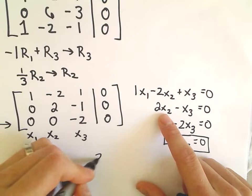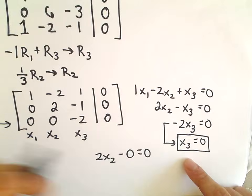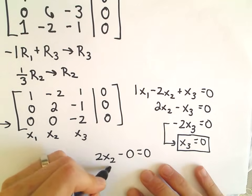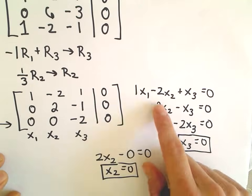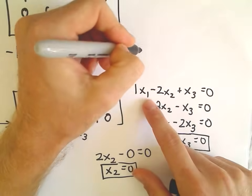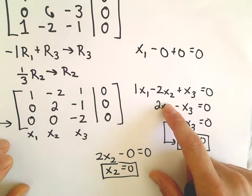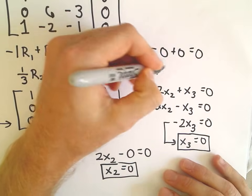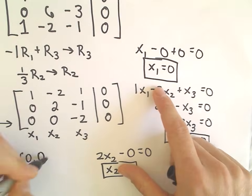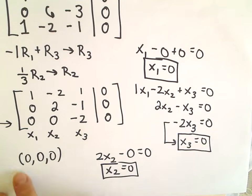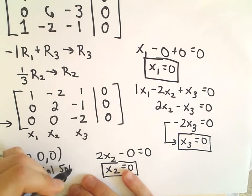Plugging x sub 3 equals 0 back into the second equation gives 2x sub 2 minus 0 equals 0, so x sub 2 must also equal 0. Plugging both back into the first equation gives x sub 1 minus 0 plus 0 equals 0, so x sub 1 must equal 0 as well. The only solution is when all three variables equal 0 — again, only the trivial solution.